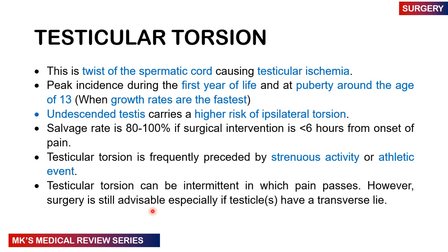We'll begin with testicular torsion. This is simply twisting of the spermatic cord, which causes testicular ischemia because most of the blood supply comes through the spermatic cord. The peak incidence is during the first year of life and also during puberty, roughly at around age 13 — when growth rates are the fastest. There is a higher risk with undescended testes, which carries a higher risk of ipsilateral torsion. The salvage rate is 80 to 100% if surgical intervention is done within six hours of onset of pain.